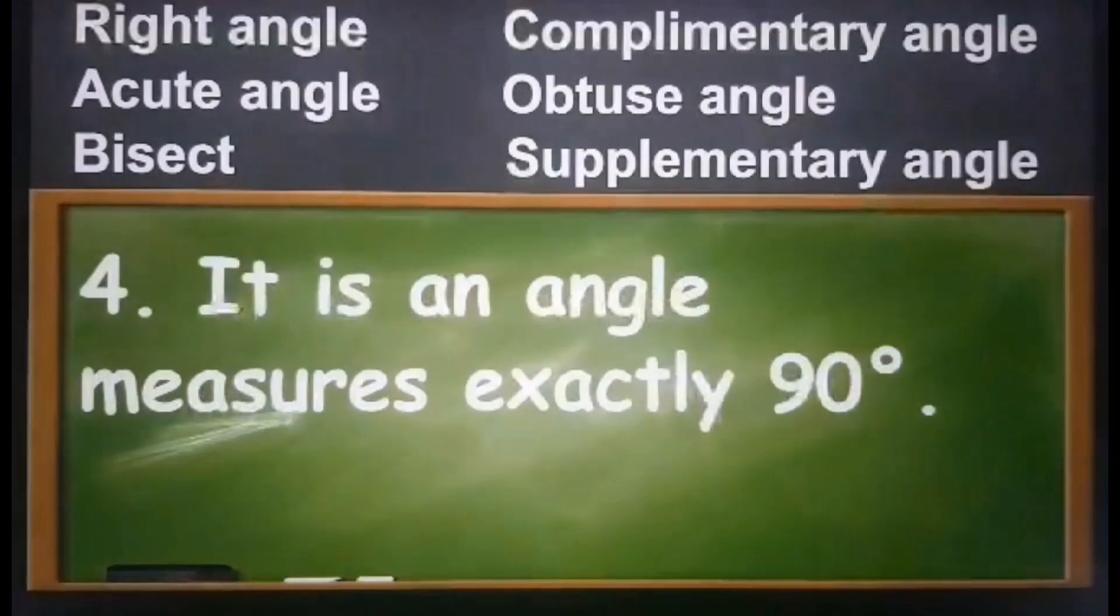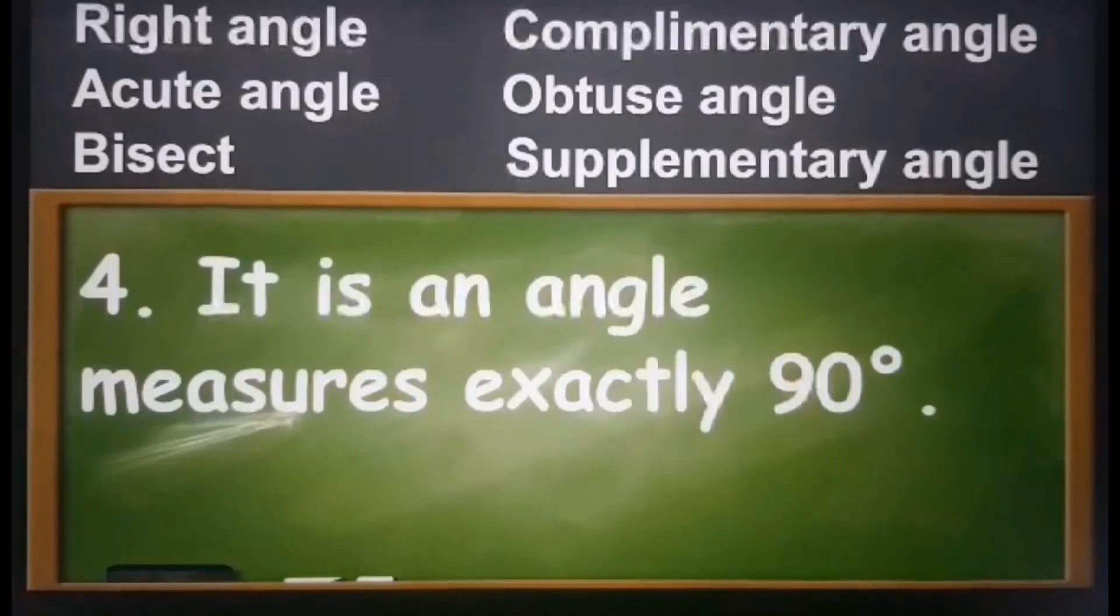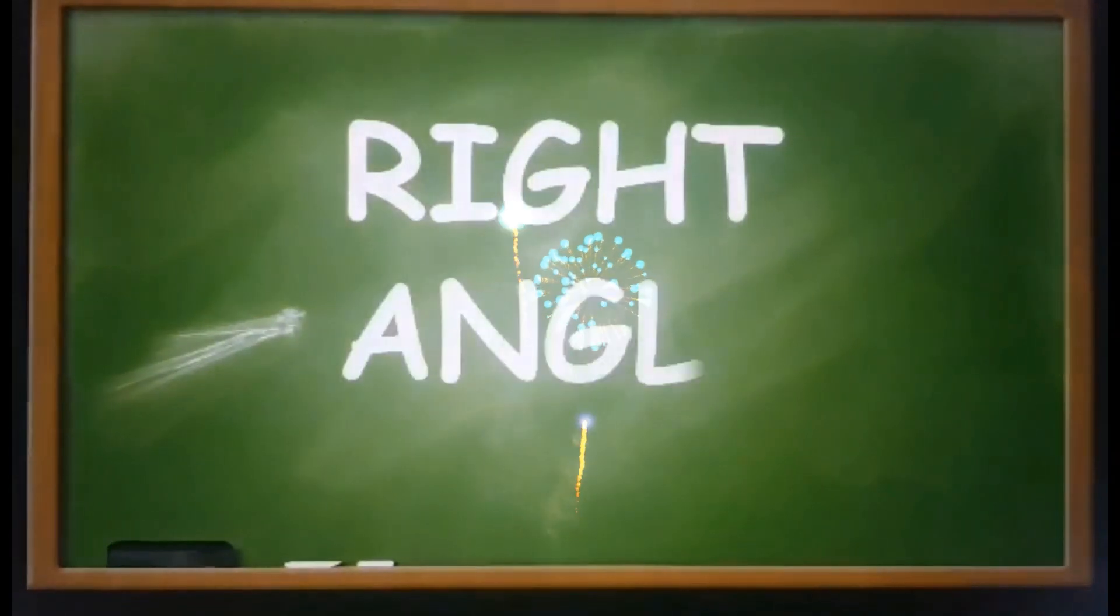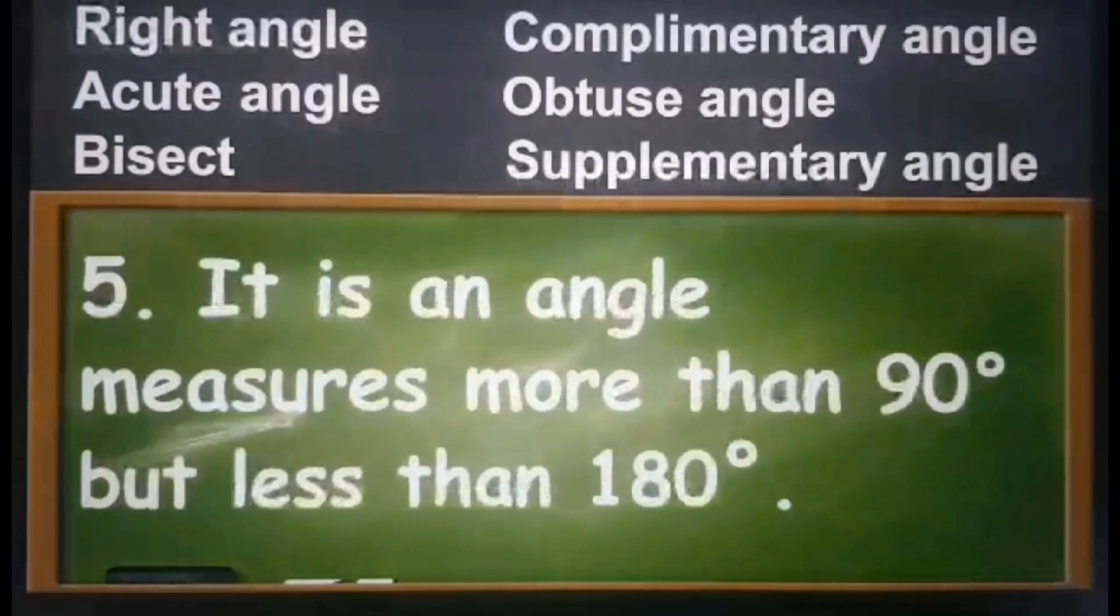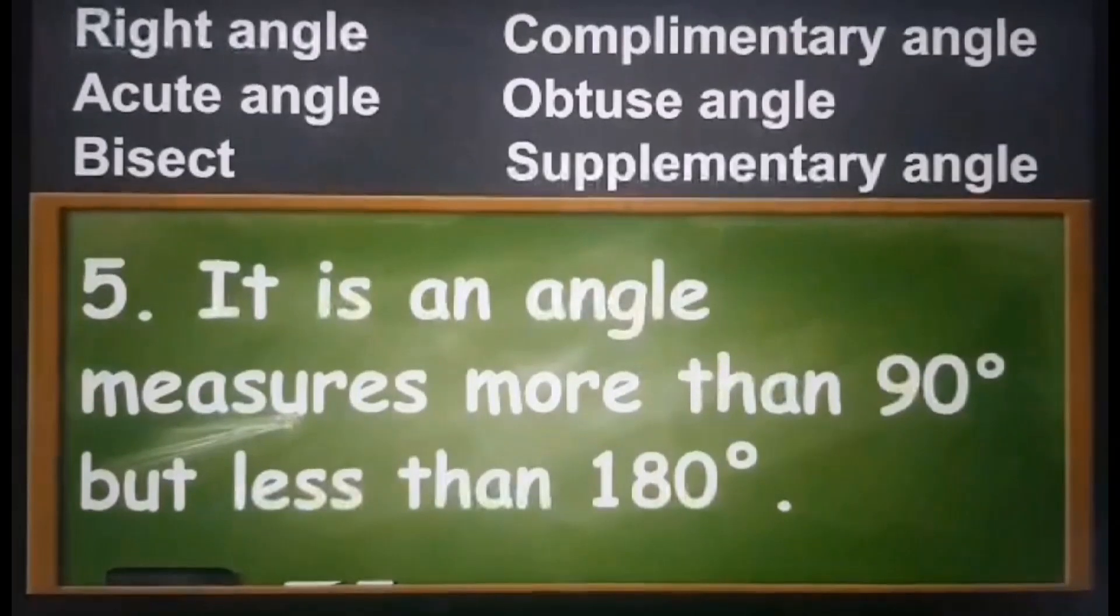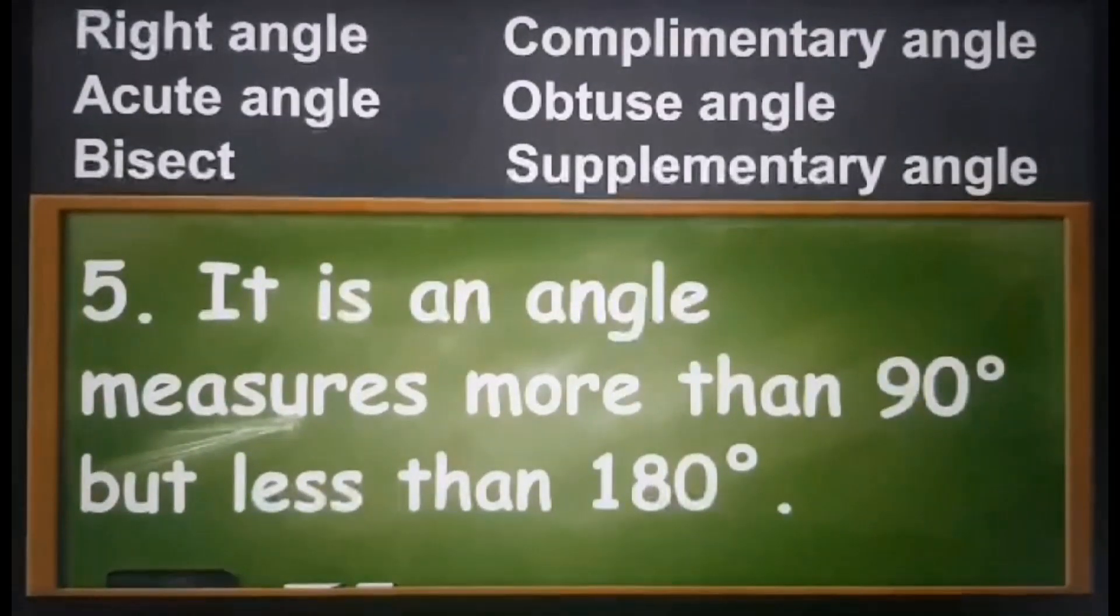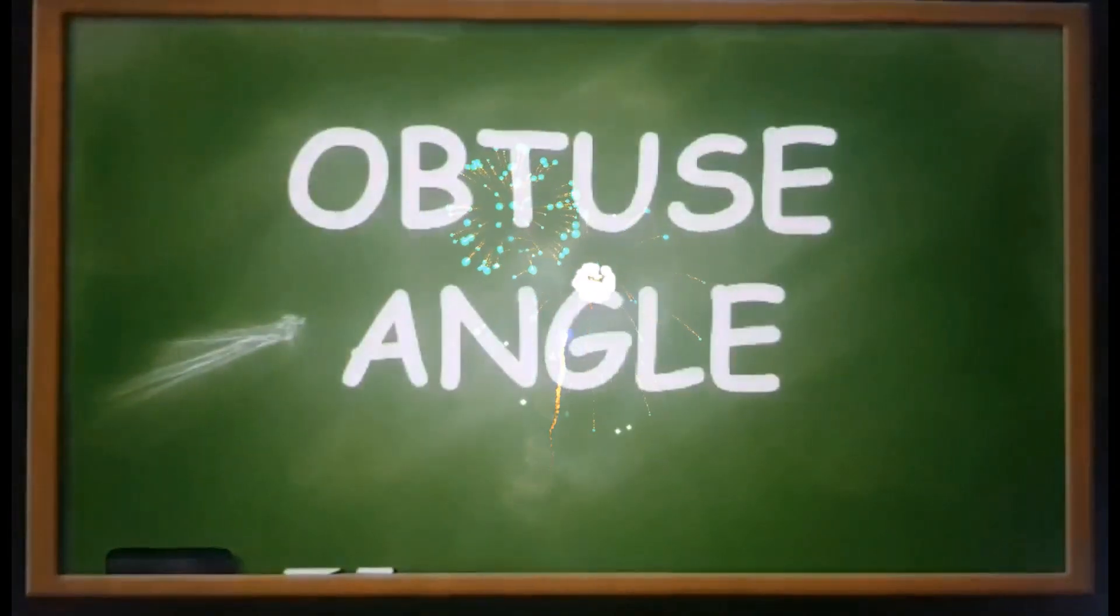Next, number four: it is an angle that measures exactly 90 degrees. The answer is right angle. I hope you got it right students. And now for the last item. Number five: an angle measure more than 90 degrees but less than 180 degrees. The answer is obtuse angle.